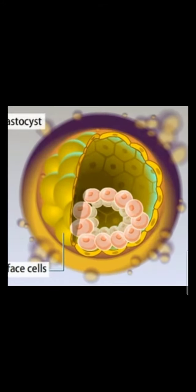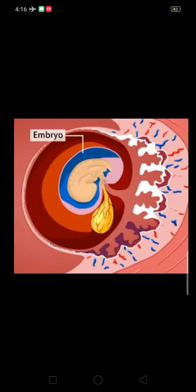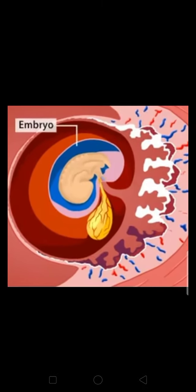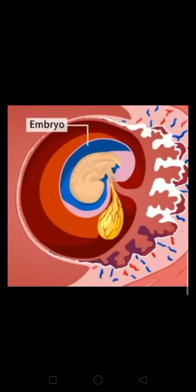The zygote immediately divides into two cells, and these cells again divide over a couple of days, resulting in a cluster of cells inside the uterus or womb. This cluster of cells is called the embryo. The embryo plants itself in the lining of the uterus and is attached to it via the placenta, and continues dividing its cells to make billions of new cells.